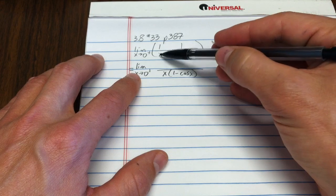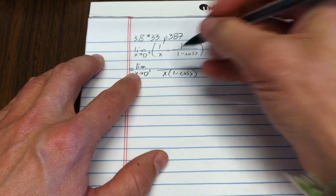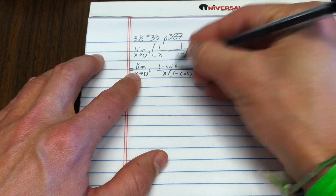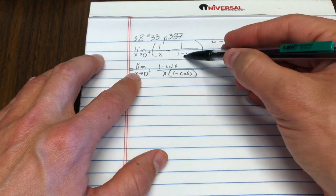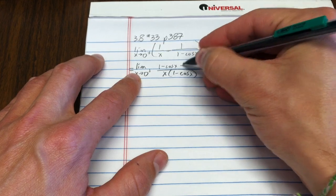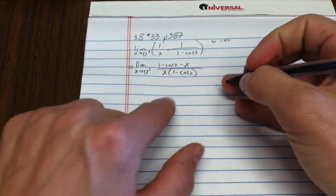This term, to get a 1 minus cosine x in the denominator, I have to put in a 1 minus cosine x in the numerator. Well, isn't that convenient?